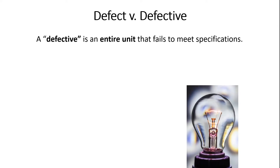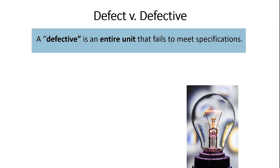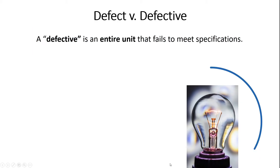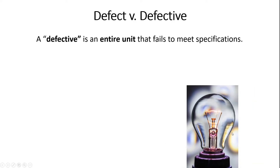So defects versus defectives. A defective unit is an entire unit that fails to meet specifications. I include this picture of a light bulb because there are a number of different things about this light bulb that might make it a defective unit. The filament might be broken, the glass might be cracked, the electrical connections might be damaged. This single unit, if it were to be inspected, could be considered a defective unit if there was anything wrong with it.